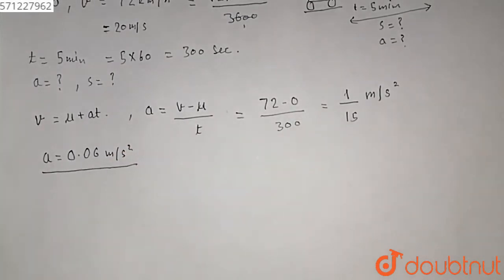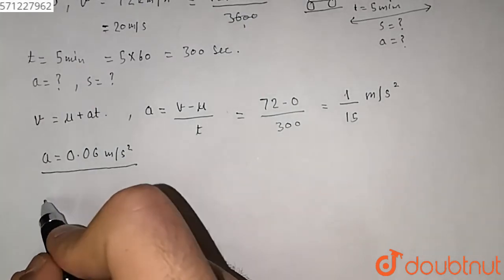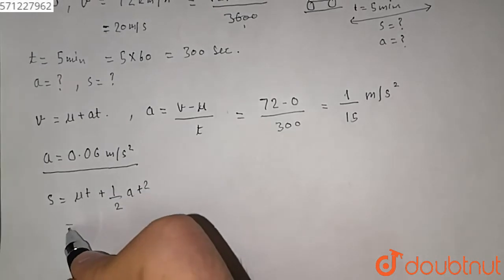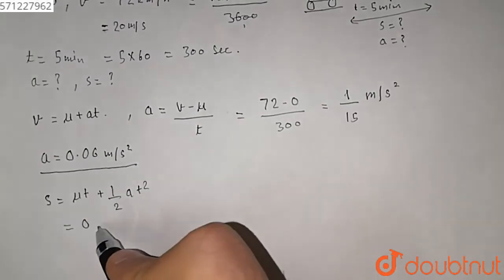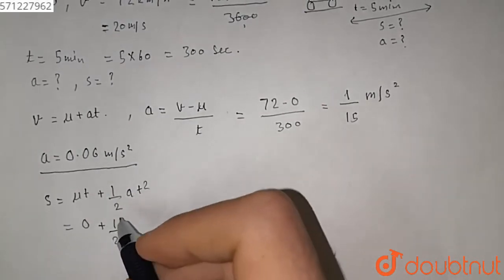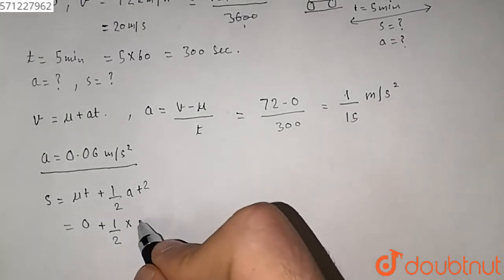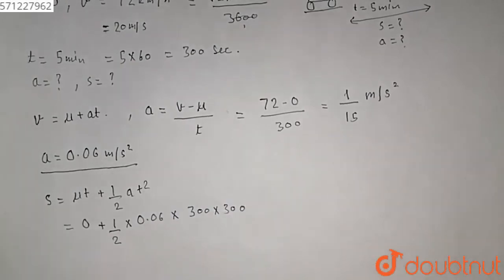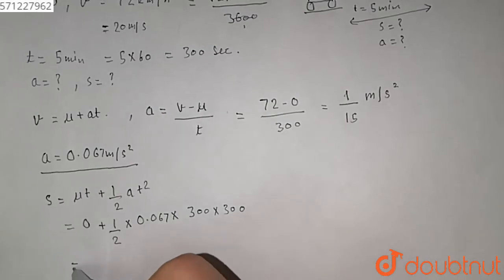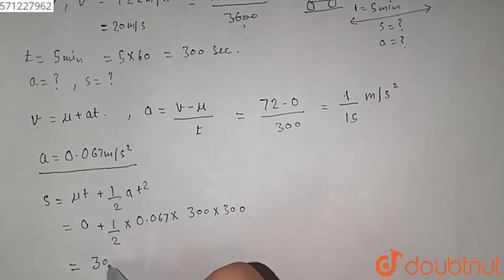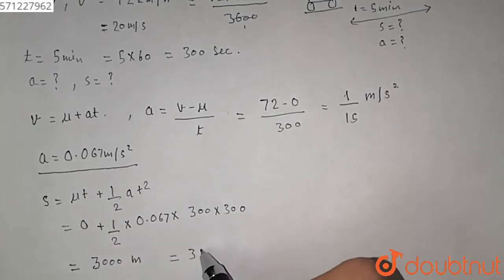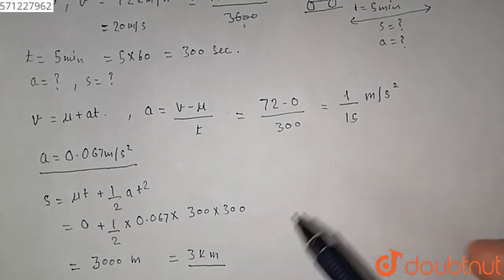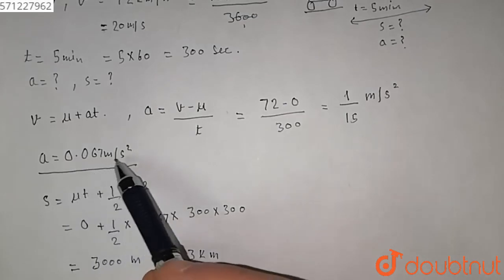This is the acceleration. Now we have to find the distance traveled by the train. To find the distance, we know that s is equal to ut plus half of at squared. Since u is equal to 0, the ut term is 0, so s equals half of a times t squared — that is 0.06 into 300 into 300 — which gives 3000 meter, which is equal to 3 kilometer. So our distance traveled by the train for attaining the velocity is 3 kilometer, and our acceleration is 0.06 meter per second squared.